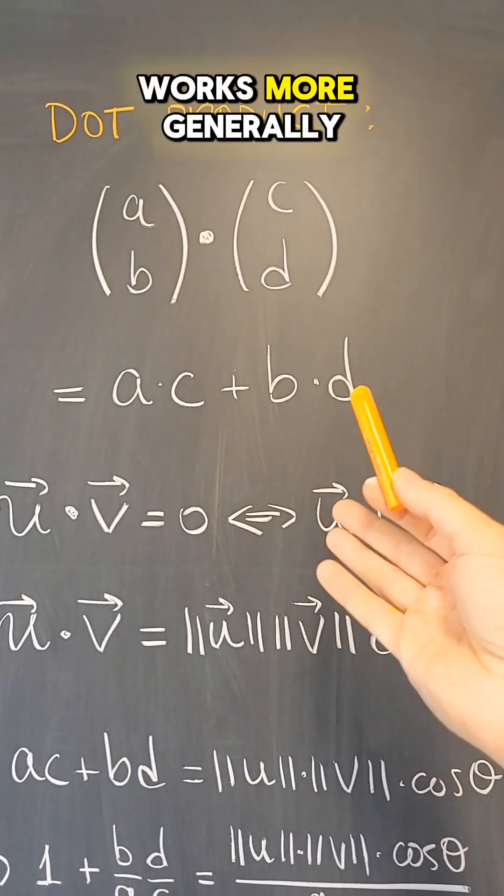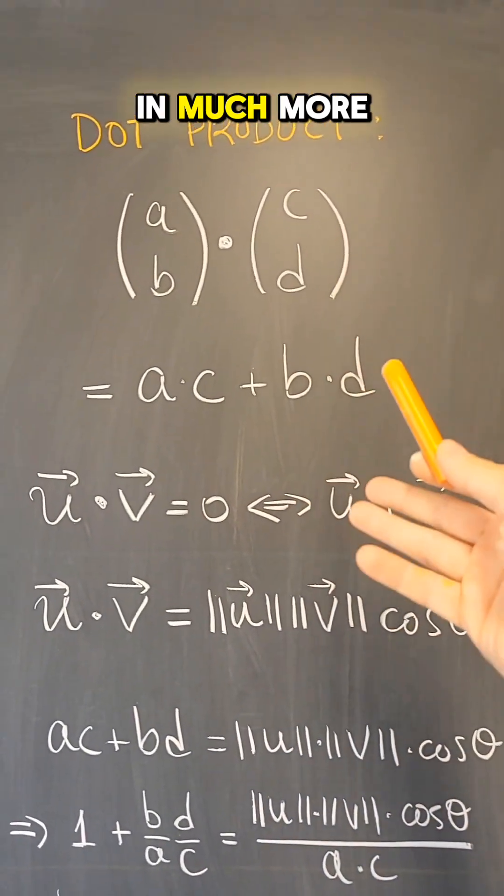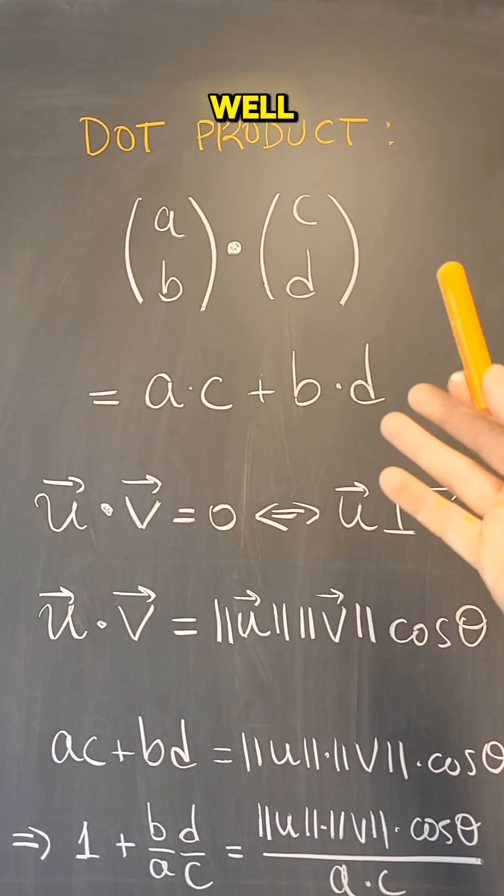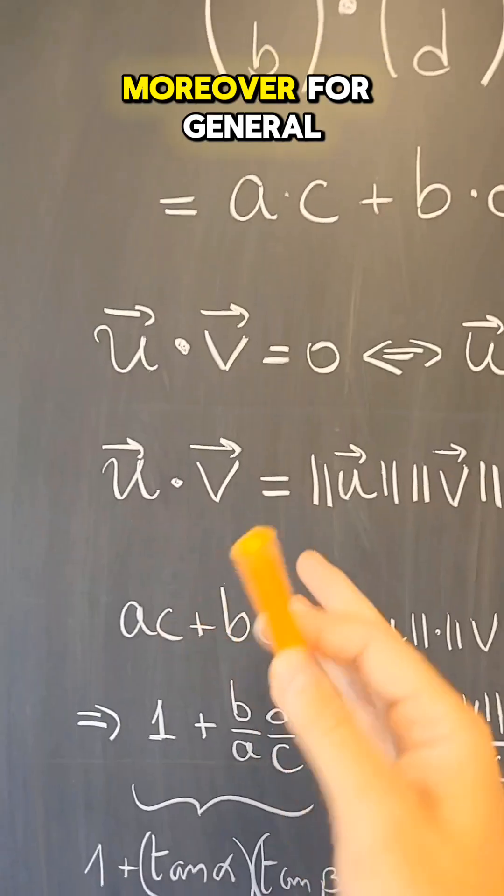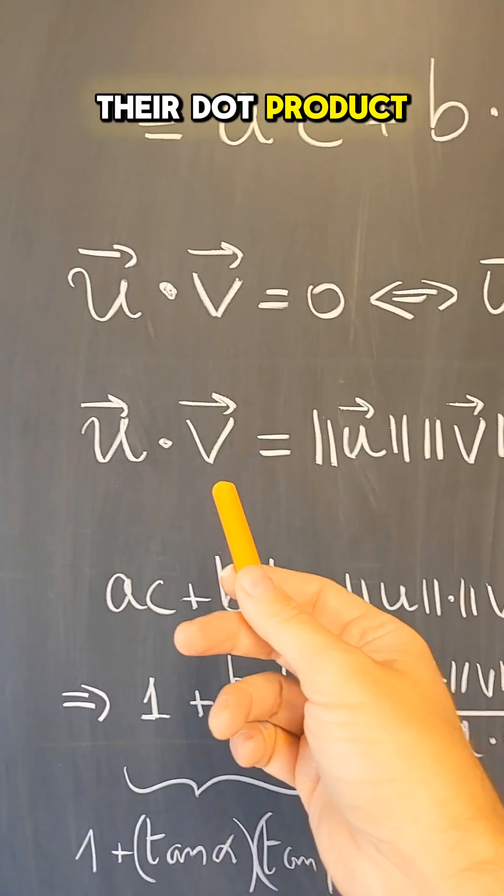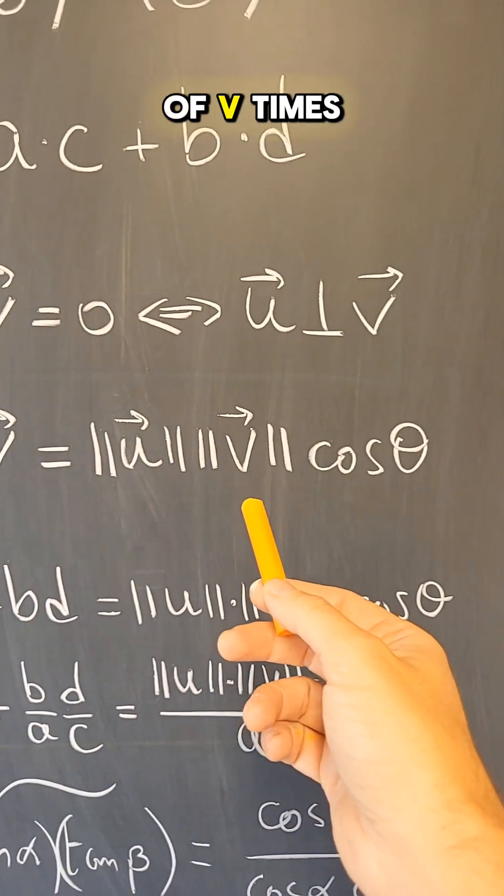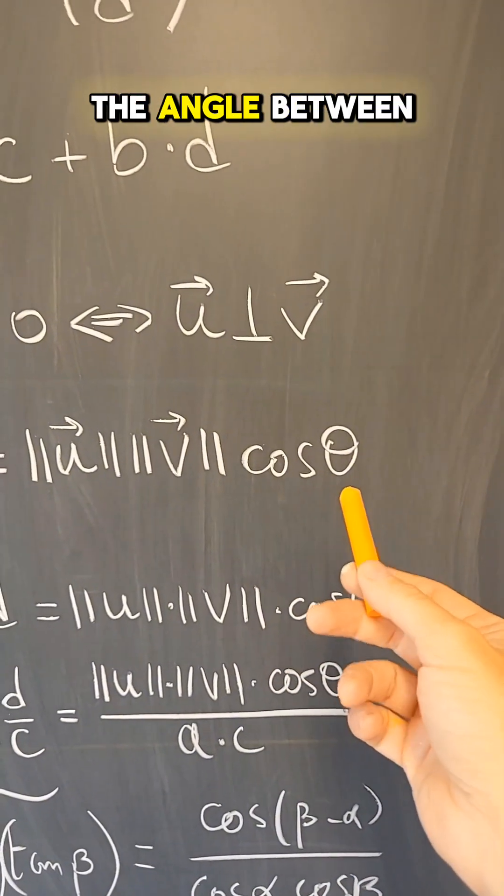And this actually works more generally in higher dimensions, and we define this actually in much more abstract settings as well. Moreover, for general vectors u and v, their dot product is always equal to the length of u times the length of v times the cosine of the angle between them.